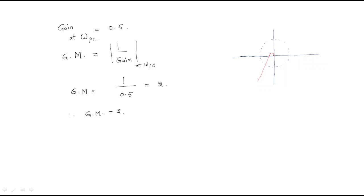For instance, if the gain at phase crossover frequency is 0.5, then the gain margin equals 1 by 0.5, which equals 2. So the gain margin is 2. By multiplying this gain margin, the given system achieves a new gain value.